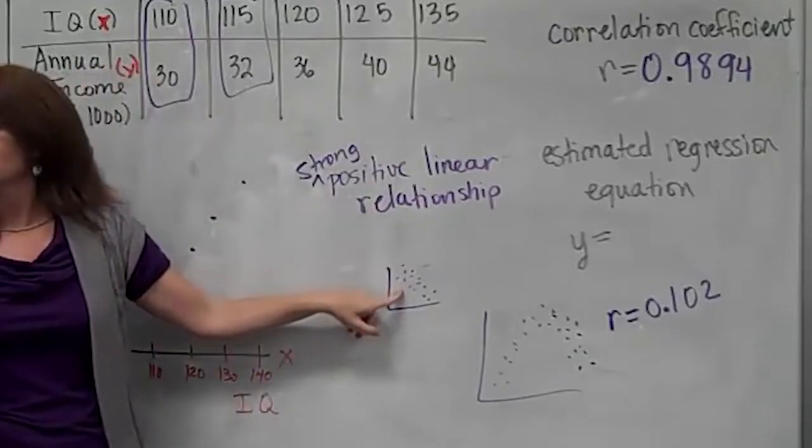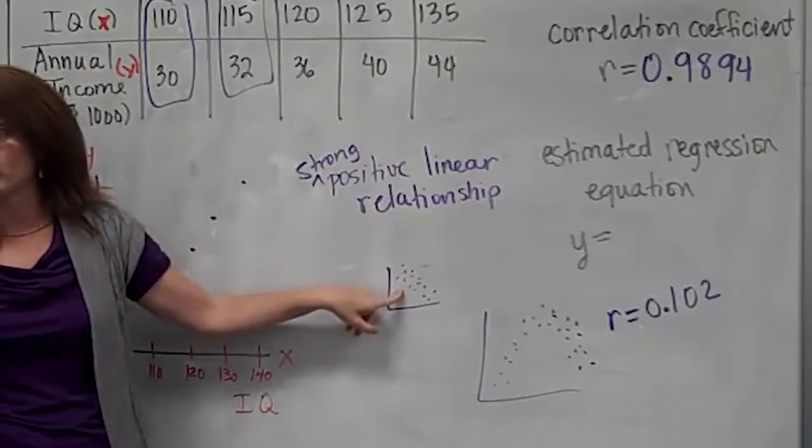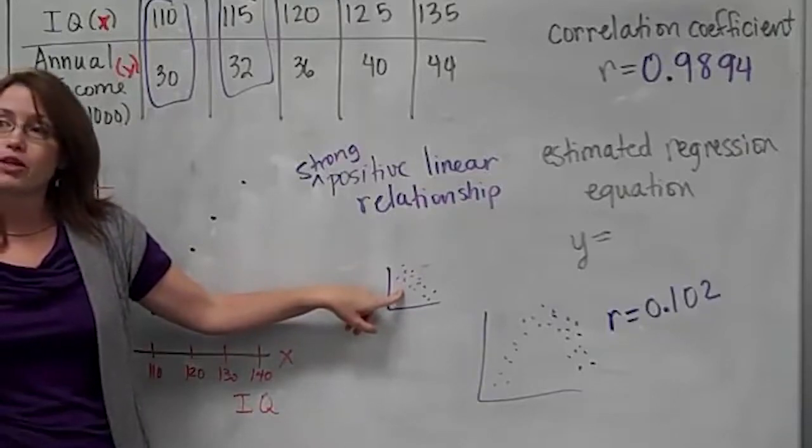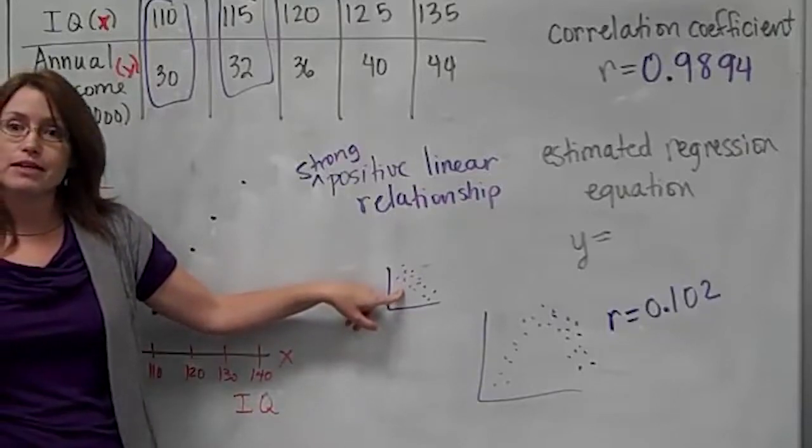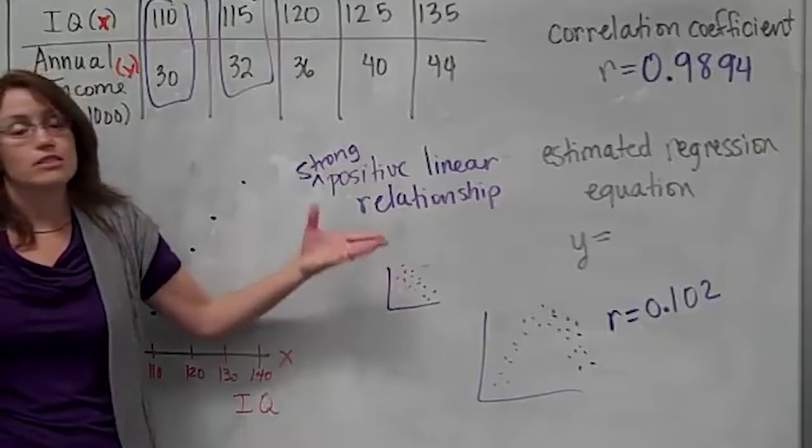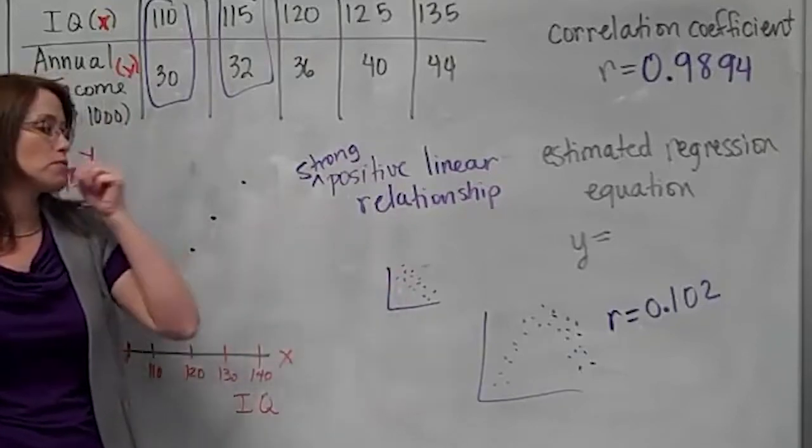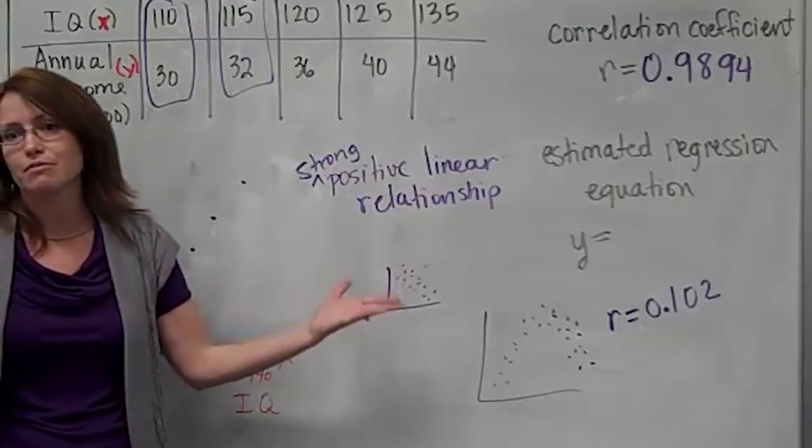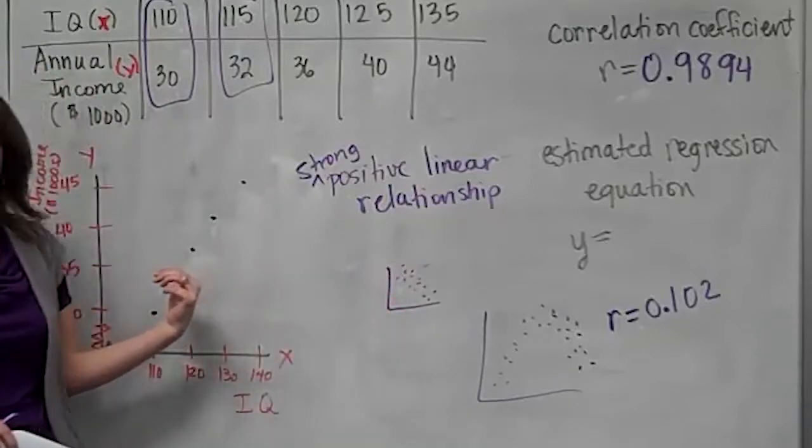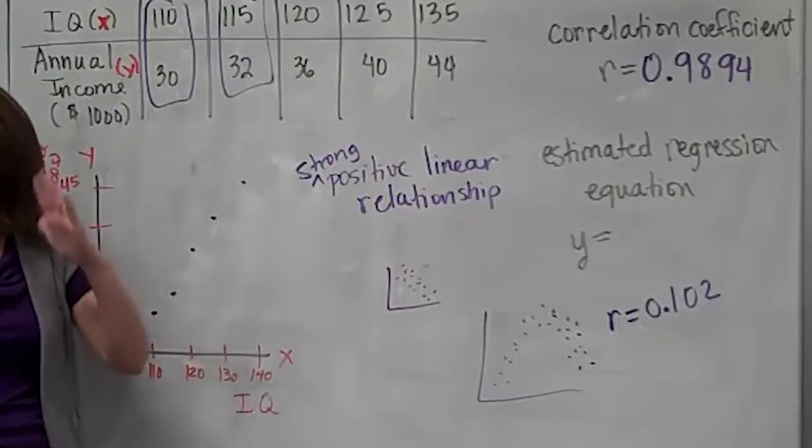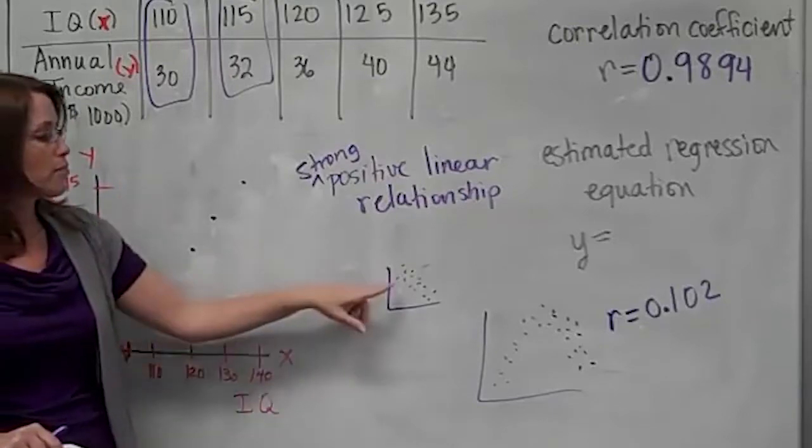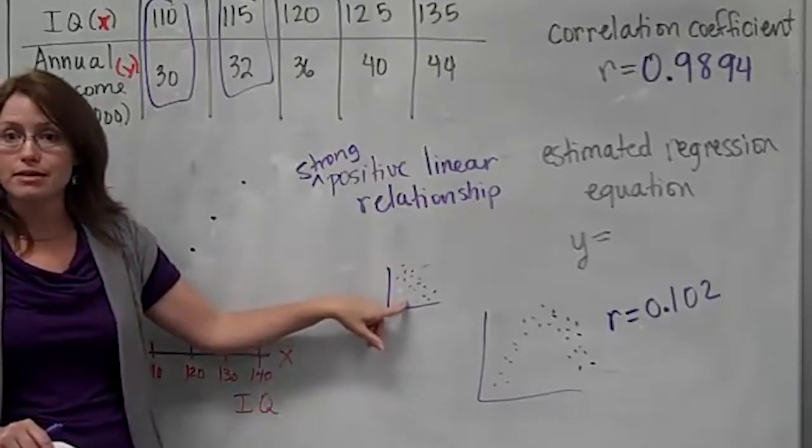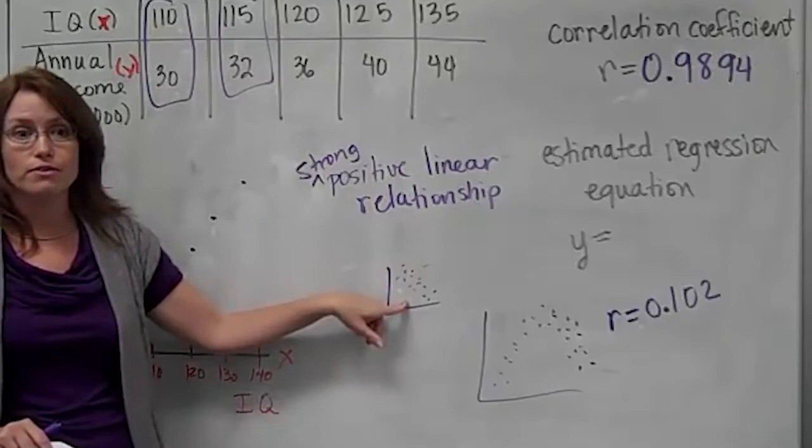This has a positive slope, so we said it had a positive relationship. Notice that the correlation coefficient is also what? Positive. The slope and the correlation coefficient will both be positive or they'll both be negative. What's the slope of this one? It's a negative slope. What would the correlation value be? It's got to be negative. I don't know if it's really strong or moderate or weak, but I do know it's negative.